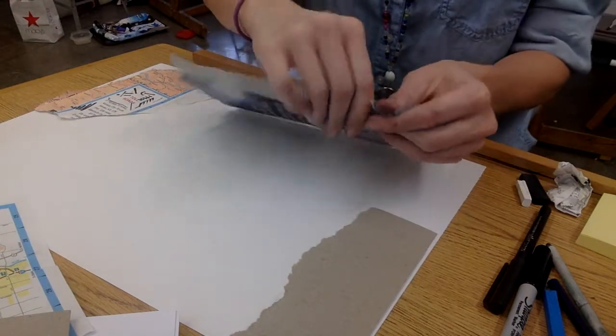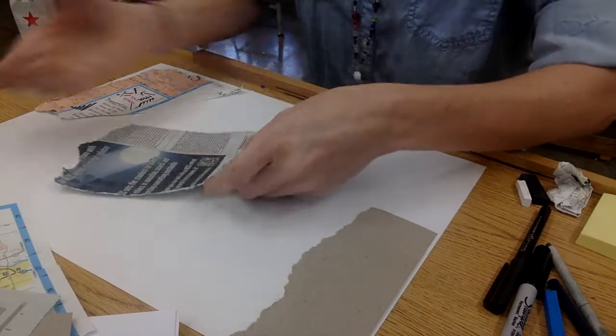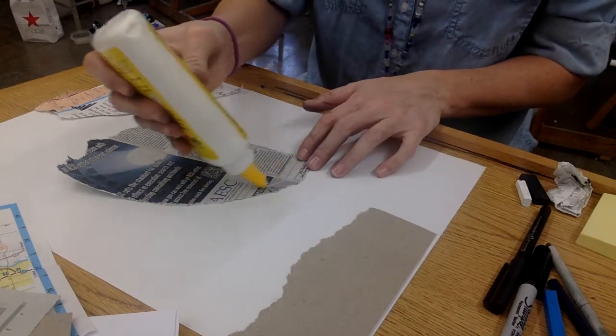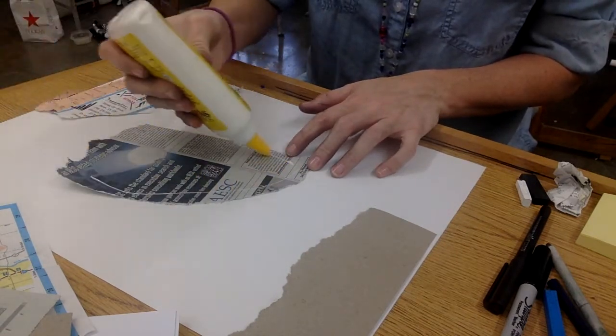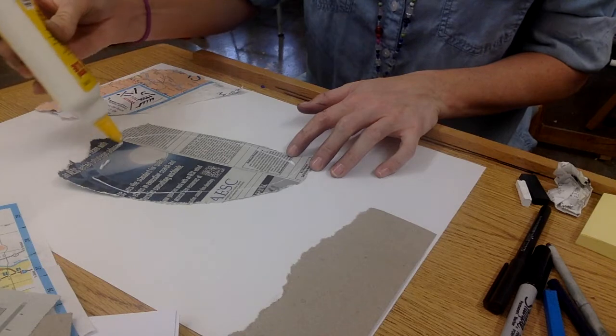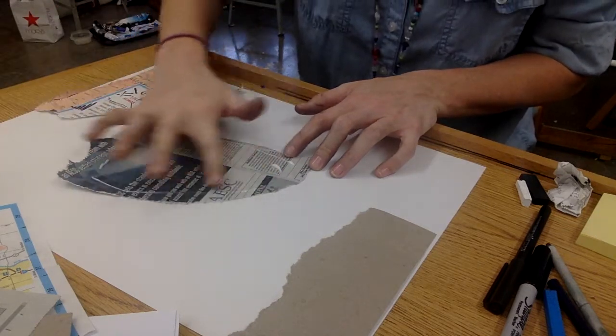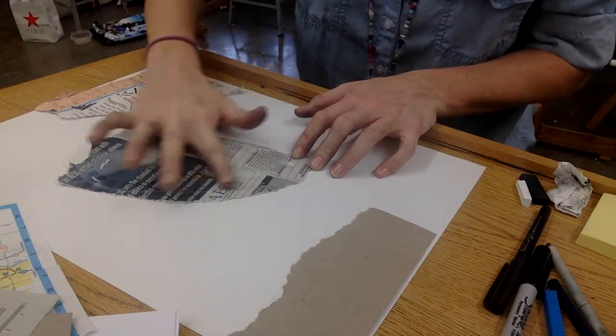You can overlap pieces. Make sure you put glue on the side that you want not to be exposed. People make that mistake a lot. So again, smooth it down.